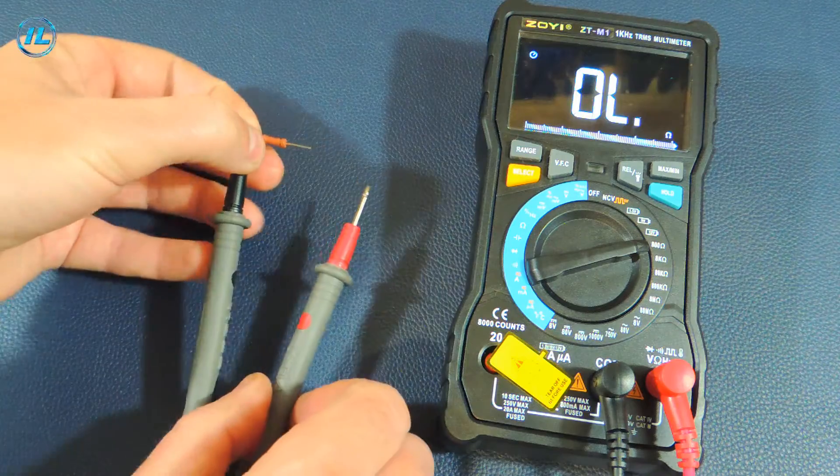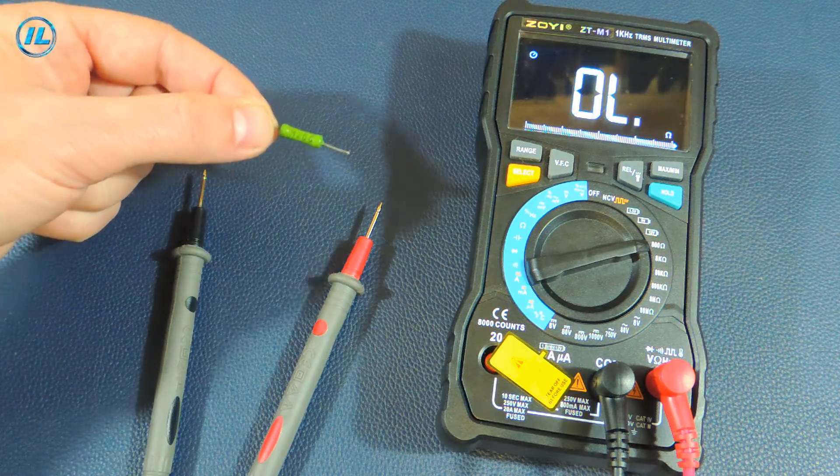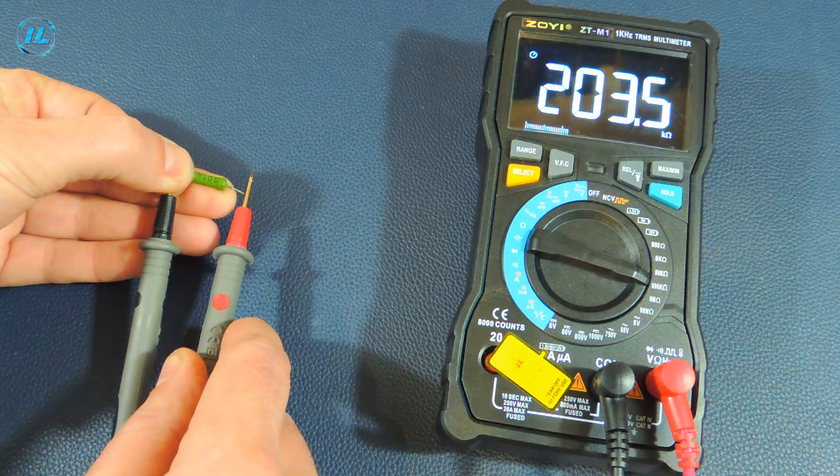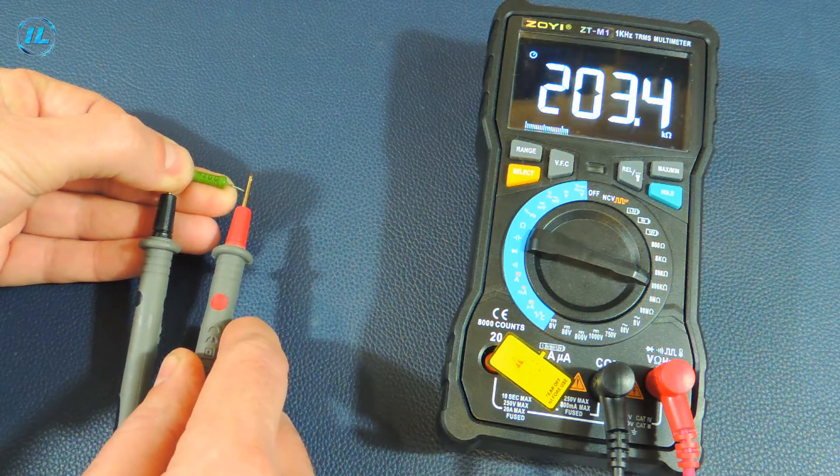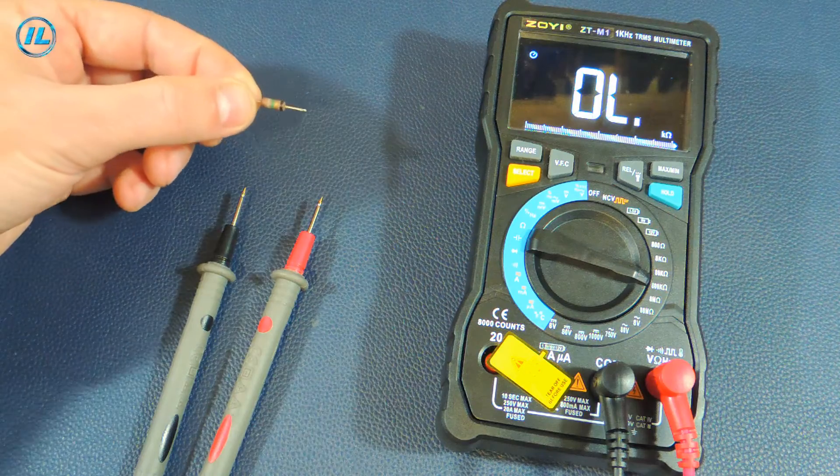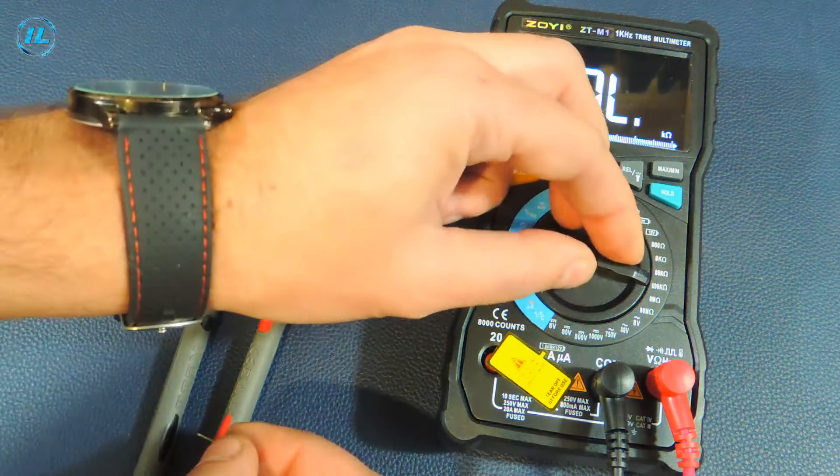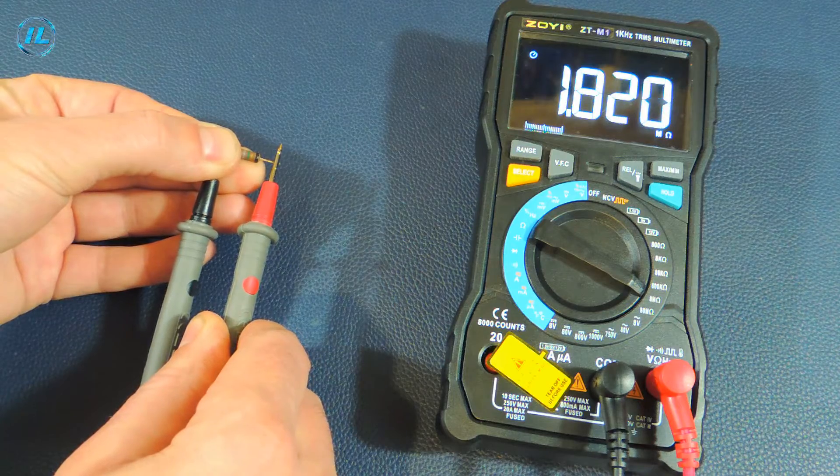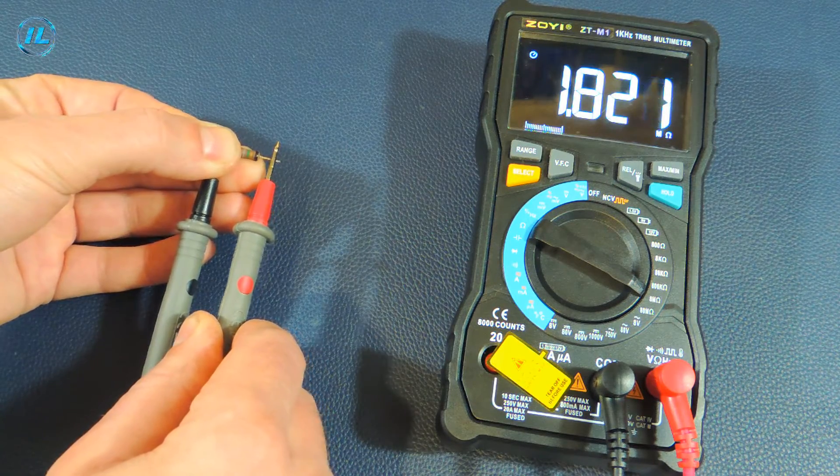Accurate enough. The next resistance is at 200 kilo ohms: 203.5 kilo ohms. And another resistance of 1.8 meg ohms: 1.82 meg ohms. Great.